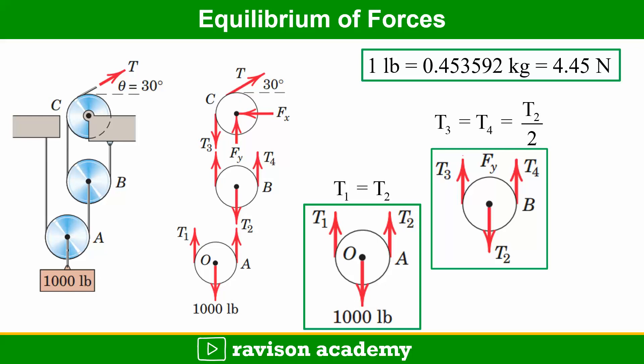For pulley A, the free body diagram can be drawn with the point O representing the center of the pulley, and T1 and T2 tension in the strings, and the 1000 pound load acting downwards. Here T1 is equal to T2.